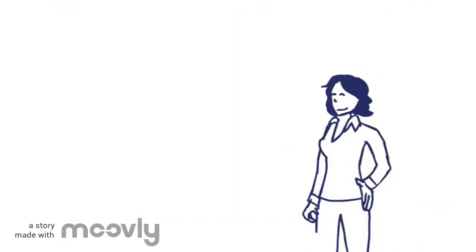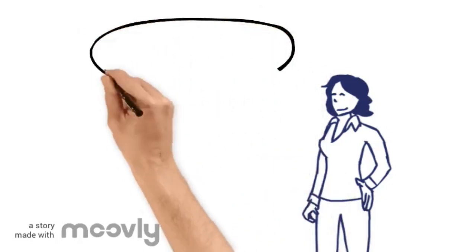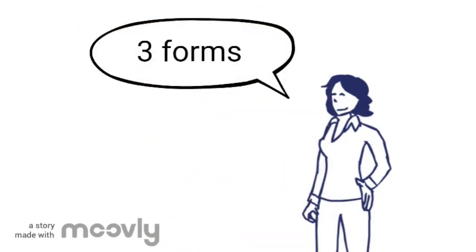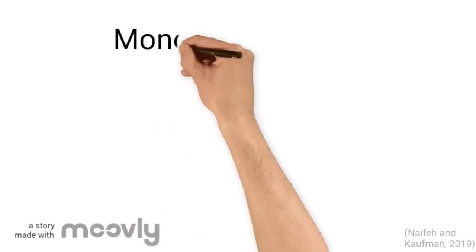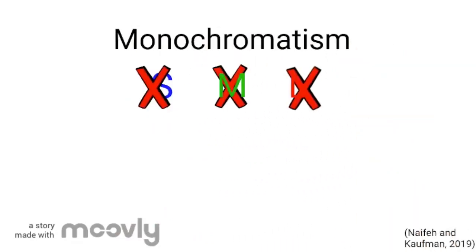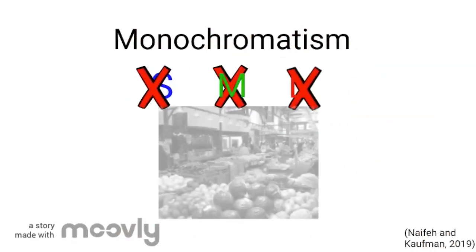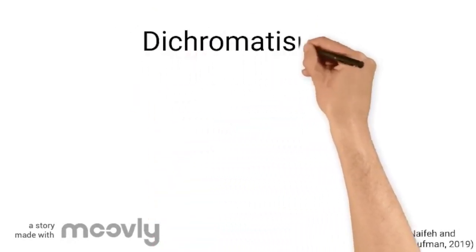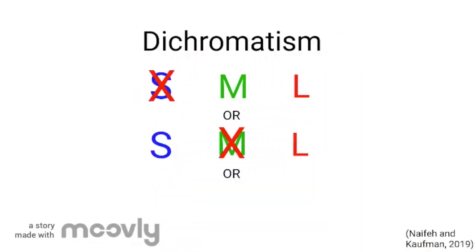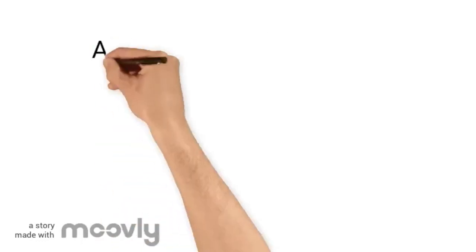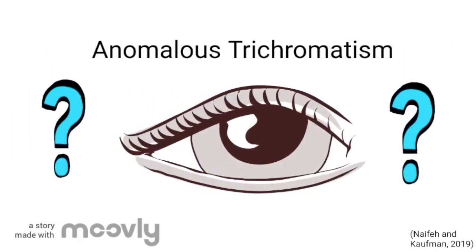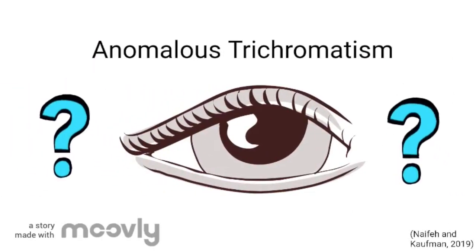Colorblindness occurs when the cone cells don't function properly. There are three overarching forms of colorblindness. Monochromatism is the absence of all three cones, resulting in the inability to perceive color. Dichromatism is the presence of only two cones. Anomalous trichromatism is when all three cones are present, but color perception is atypical.